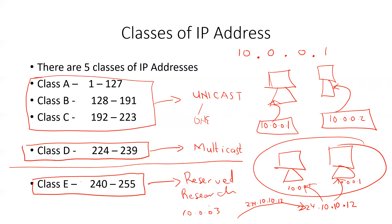We finally looked at the various types of addresses that make up each class. Class A, B, and C are unicast addresses, meaning we can pick an IP address and assign it to a machine. Class D addresses are multicast addresses, assigned to groups of machines. We gave the WhatsApp analogy: every person has a phone number, but you can also be added to a group — a message to the group is received by everybody in it. That's the concept of multicast. My name is George Banfo, and I'll see you in our next lesson. Thank you.